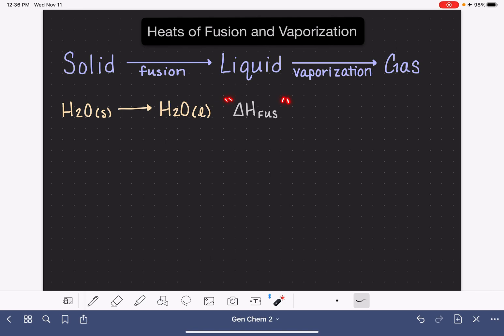We pronounce this delta H fusion because it is referring to the melting process. For water, the value of the change in enthalpy of fusion is a positive 40.79 kilojoules per mole. It's not important that you memorize this number, but we're going to use it as a reference point.